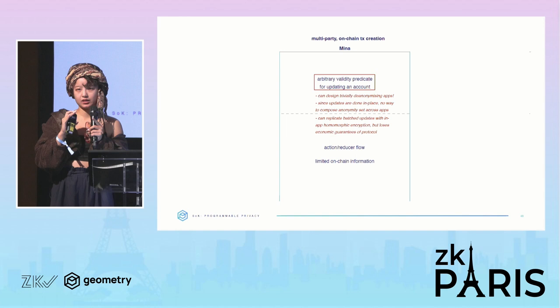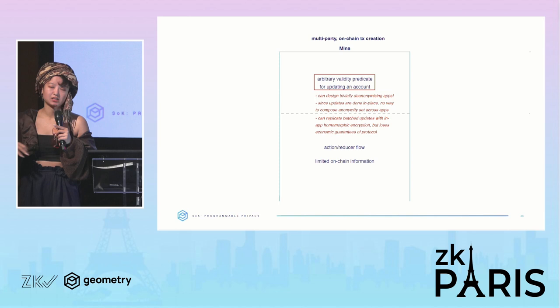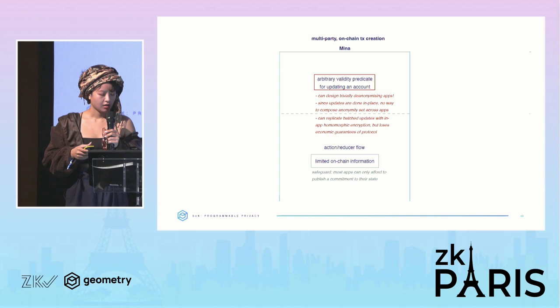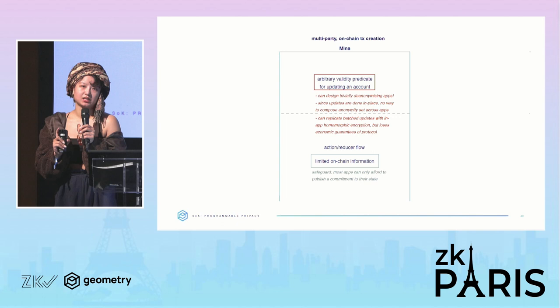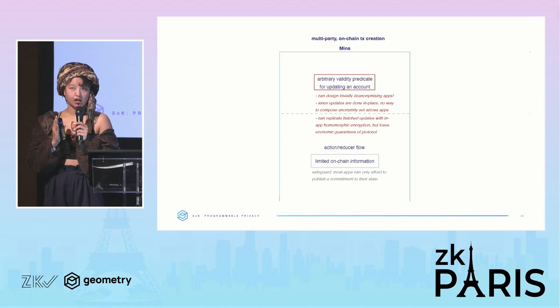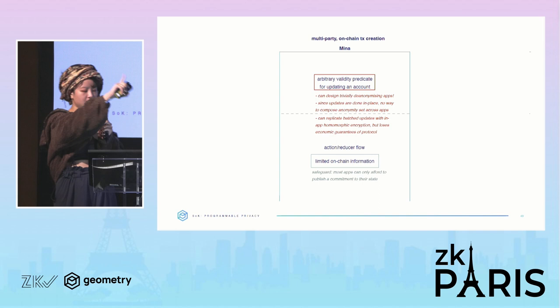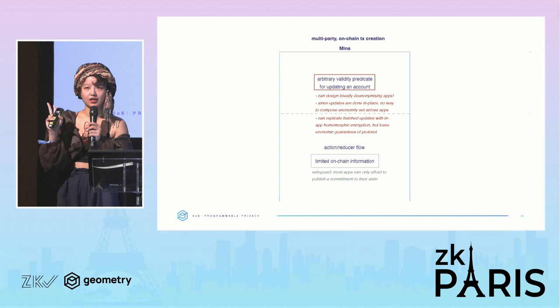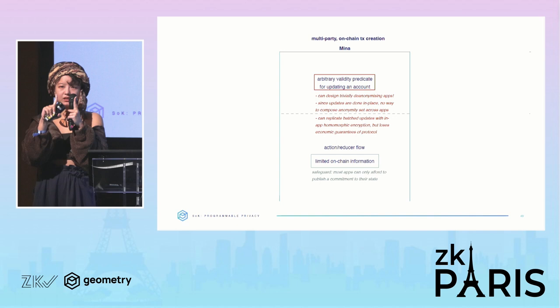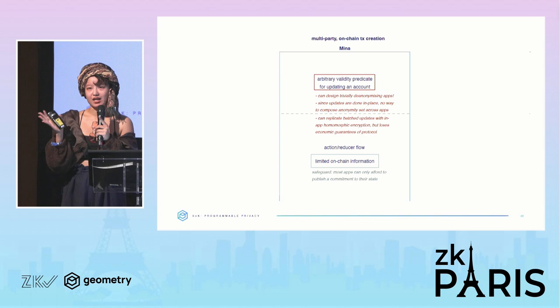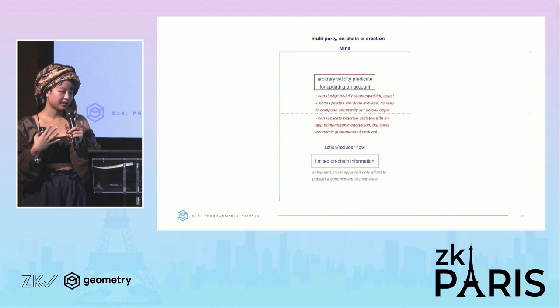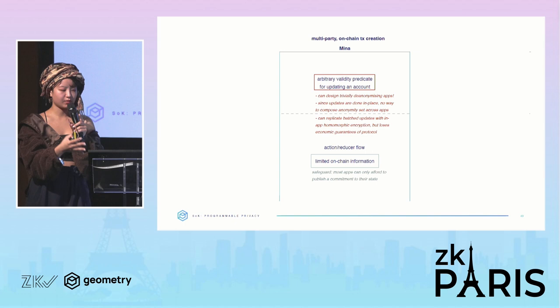The difference with Penumbra is that the authority you're encrypting to is not directly the chain's validator set — it's your own validator set or admin function. Another quality of Mina is a very limited execution environment: the Mina validators only do two things — run the action-reducer flow and verify proofs — and there is very limited storage space per app. This effectively forces application designers to keep most of their data off-chain, but you could still design a trivially de-anonymizing app; it just makes it a bit harder.